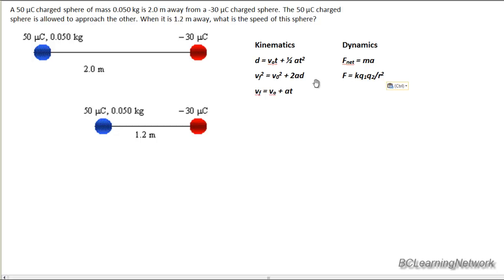Once they have the acceleration, they can then switch to kinematics and figure out the final velocity. We assume it's initially at rest, so V0 is zero. We're trying to find V final, and the distance over which that force acts is 2 minus 1.2 meters, so 0.8 meters, and they plug it all in, and they get an answer, but unfortunately, it's wrong.